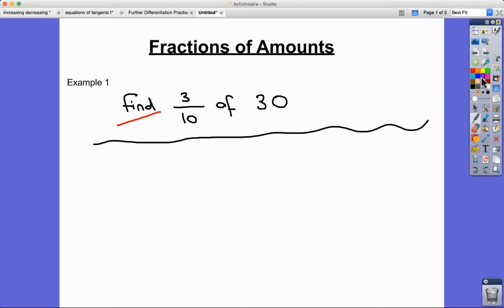The trick here that you always need to do, whatever this fraction is - in this case 3/10 - find 1/10 of it first. Just stick a 1 at the top, find 1/10 of 30. Now what is that? Imagine you've got 30 pounds or 30 dollars you have to share between 10 people.